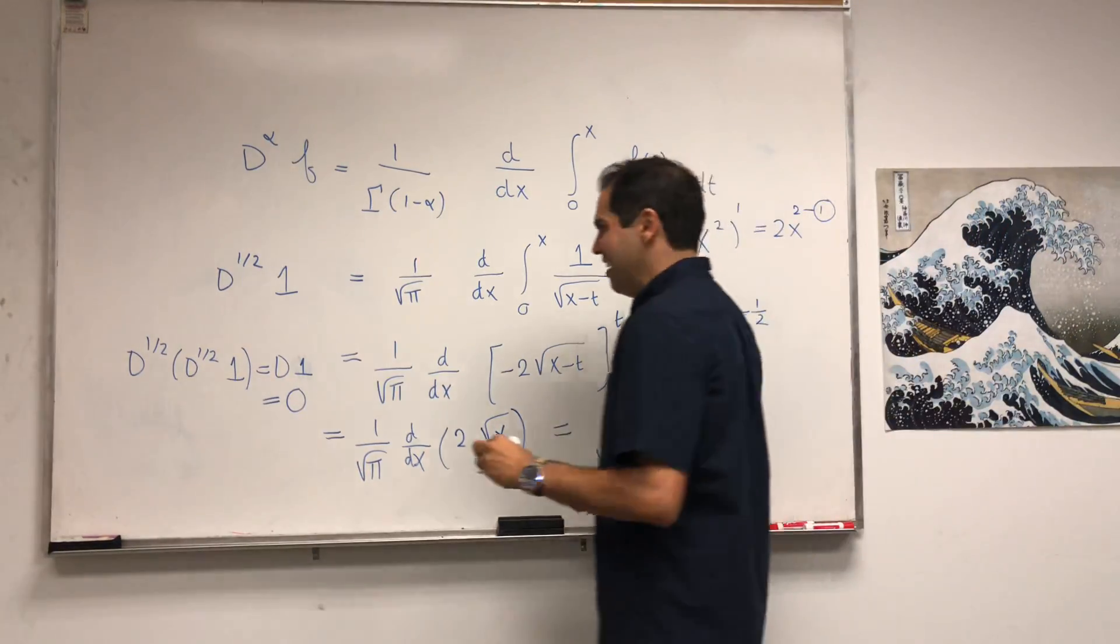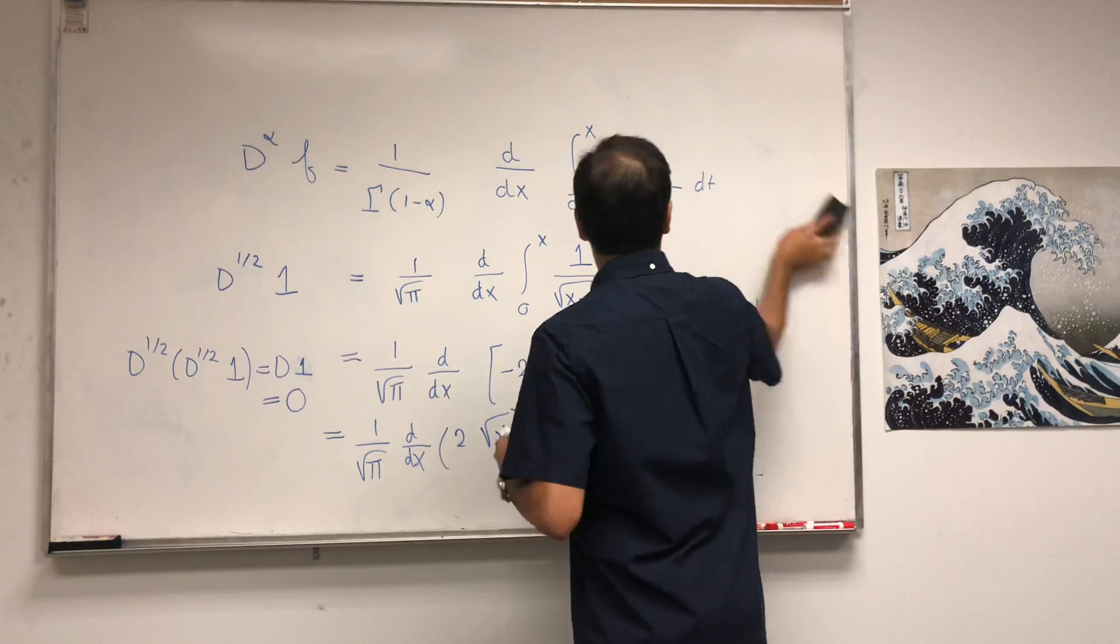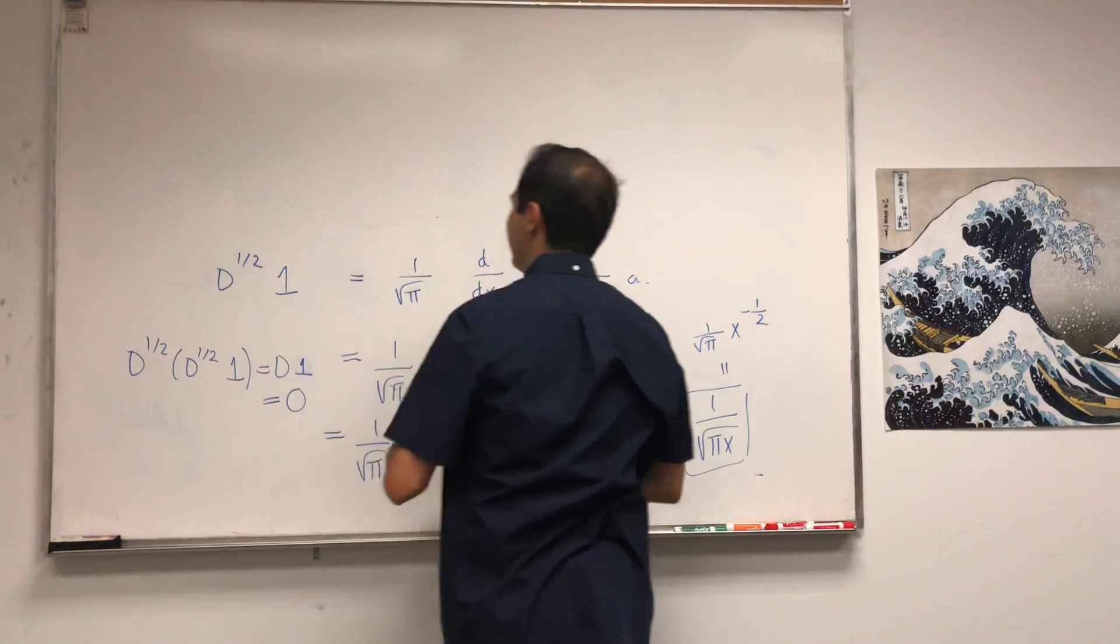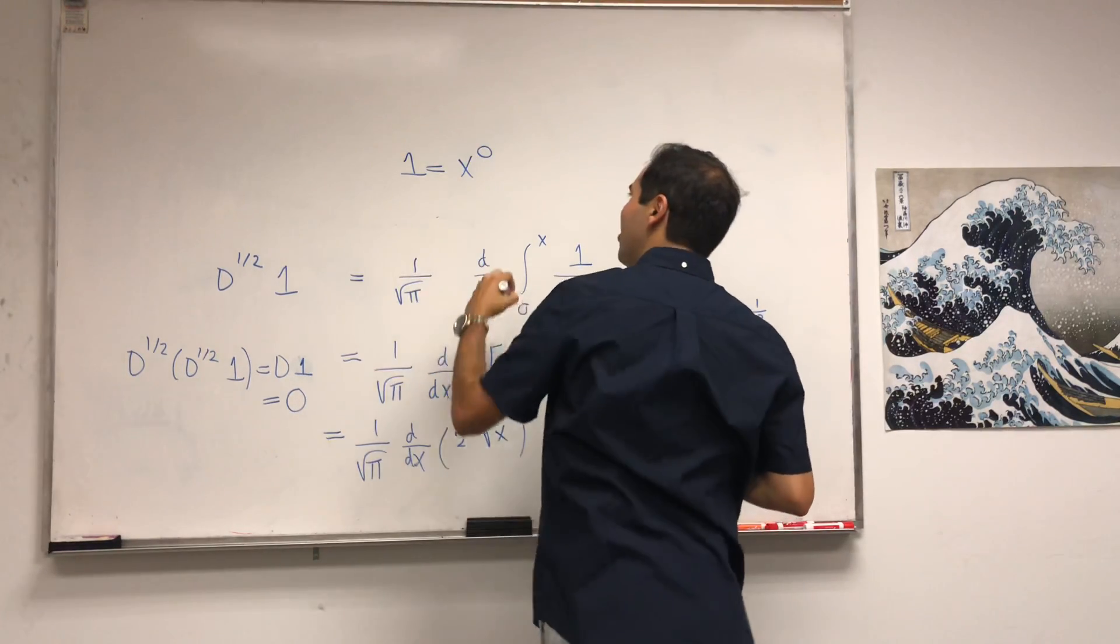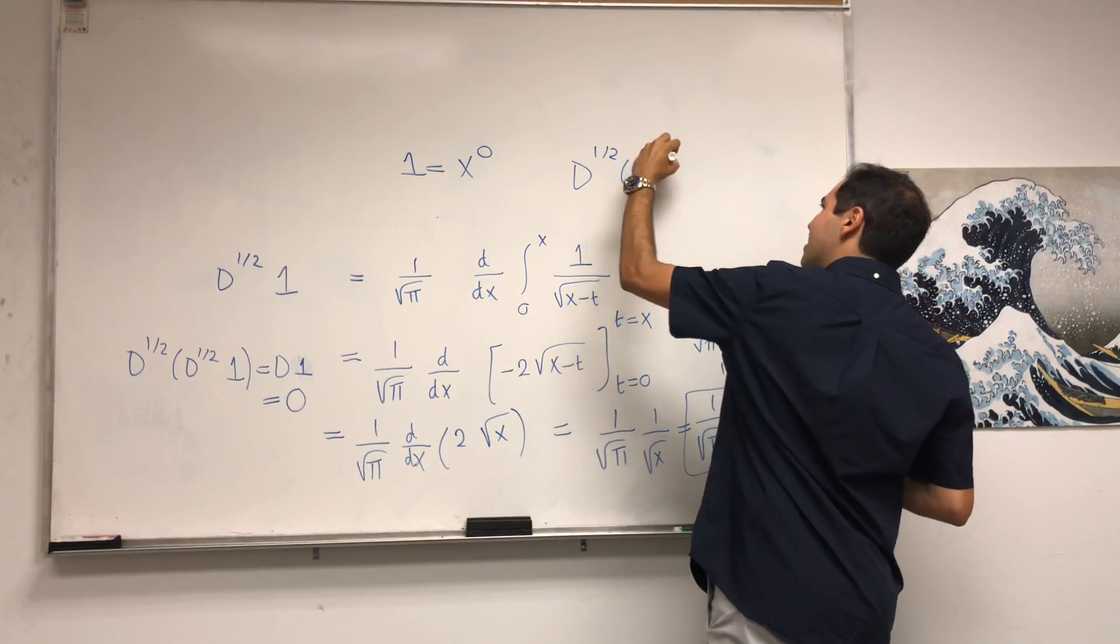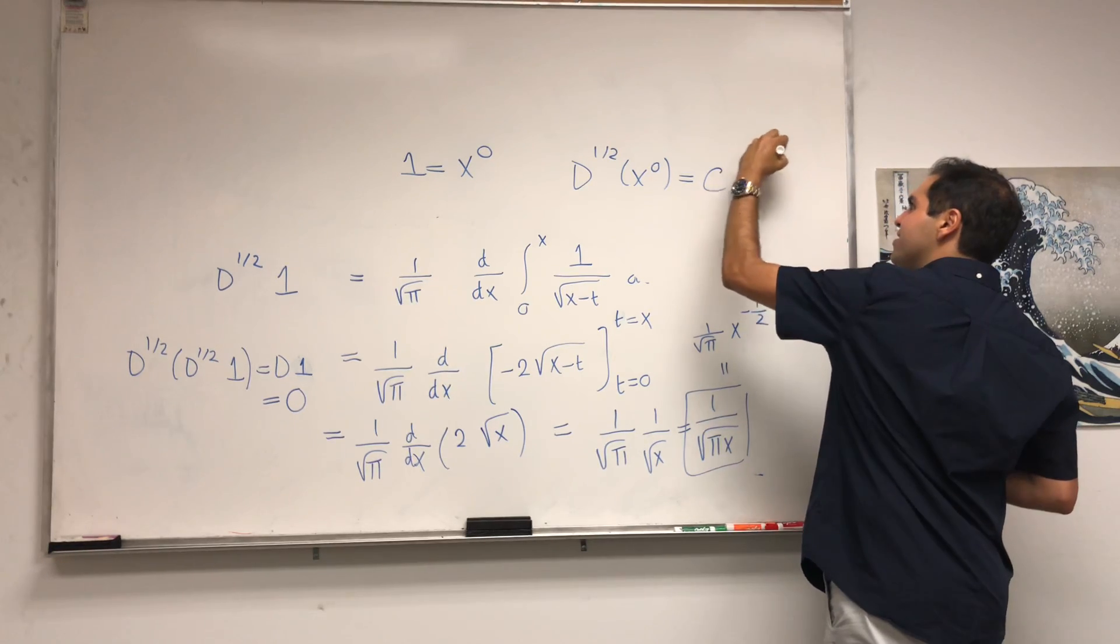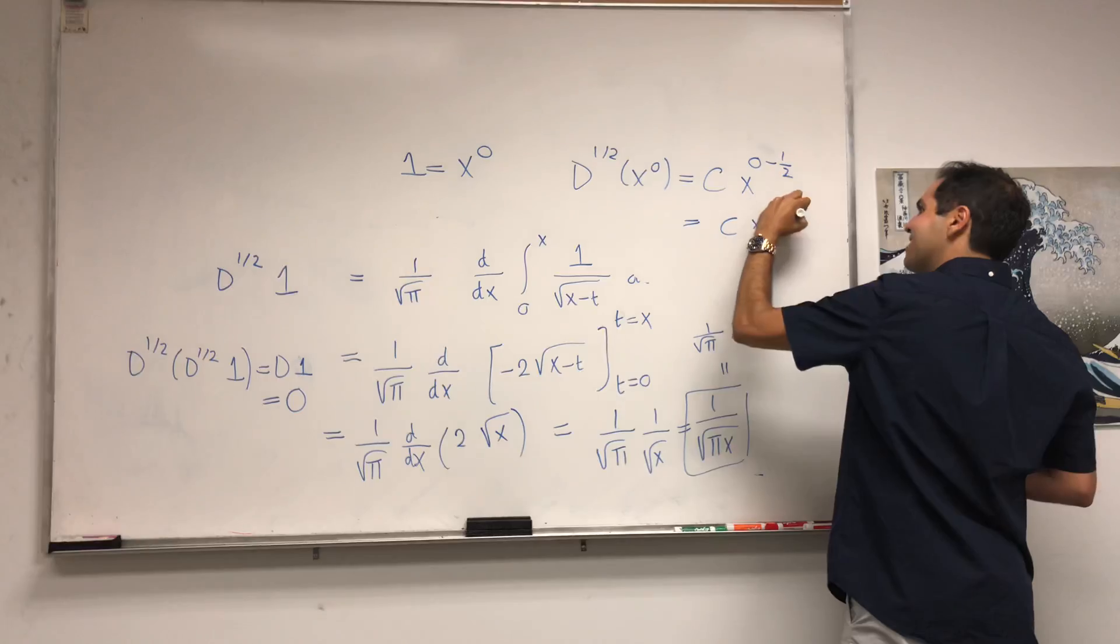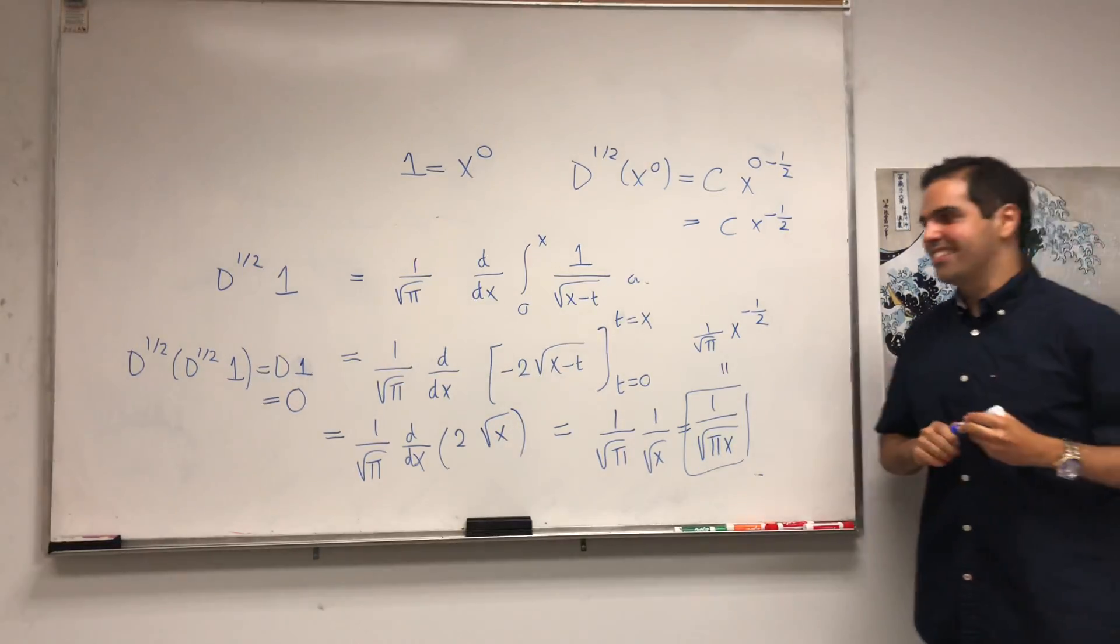And in fact, this sort of makes sense here because what is 1? 1 is x to the 0. So if you take the half derivative of x to the 0, you should get some constant times x^(0 - 1/2), which is some constant times x^(-1/2), which makes sense in this case.